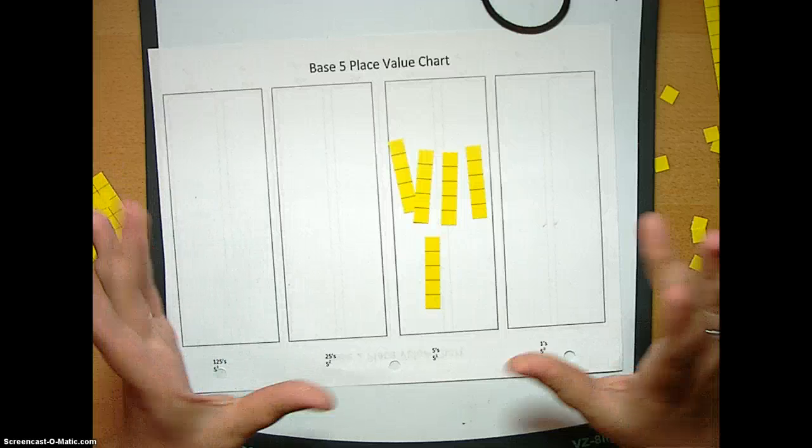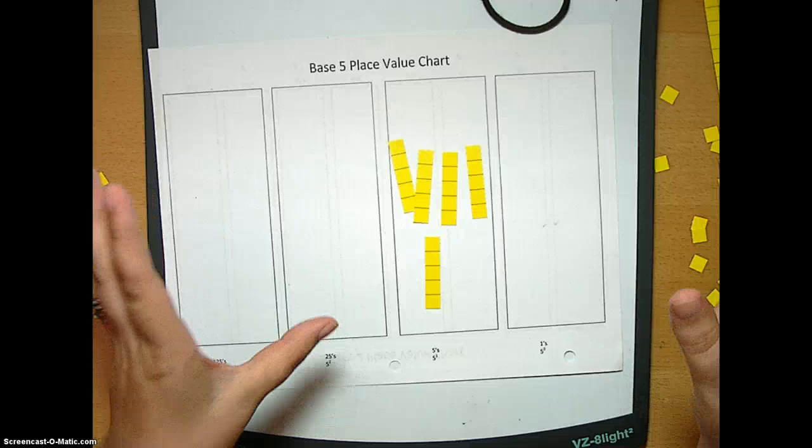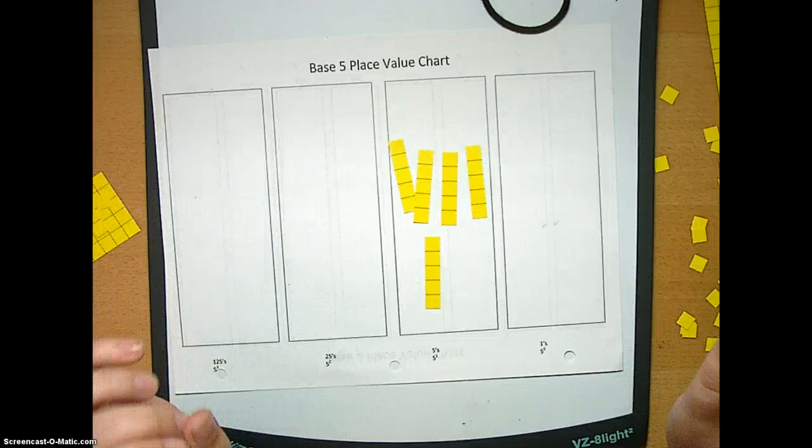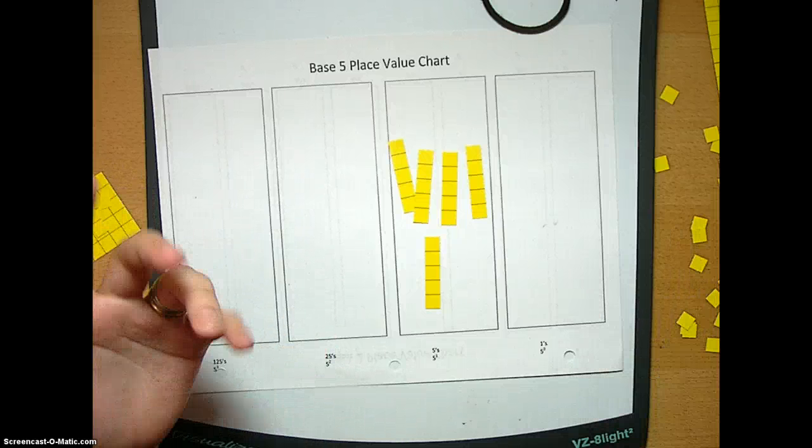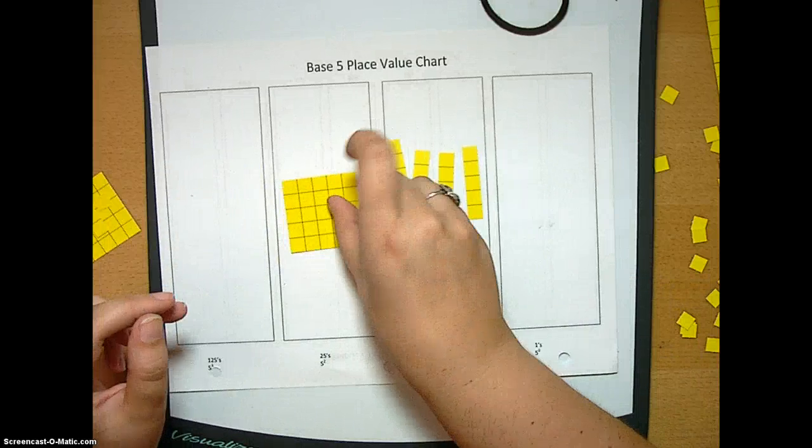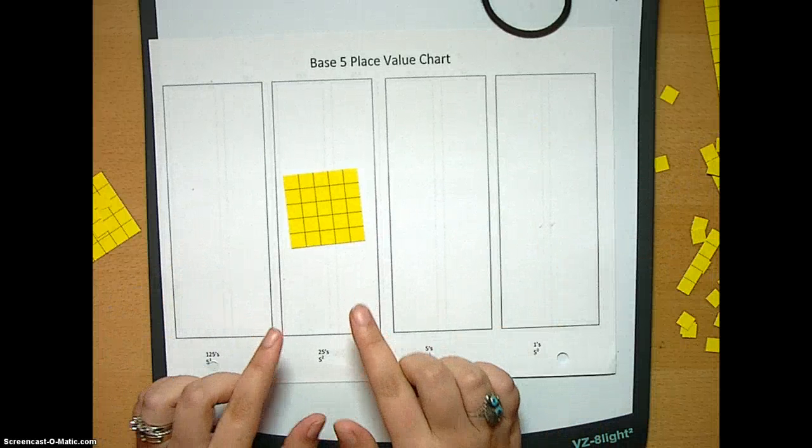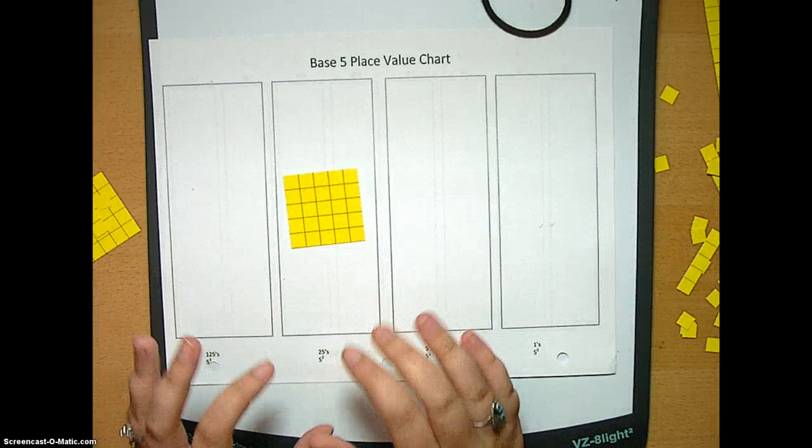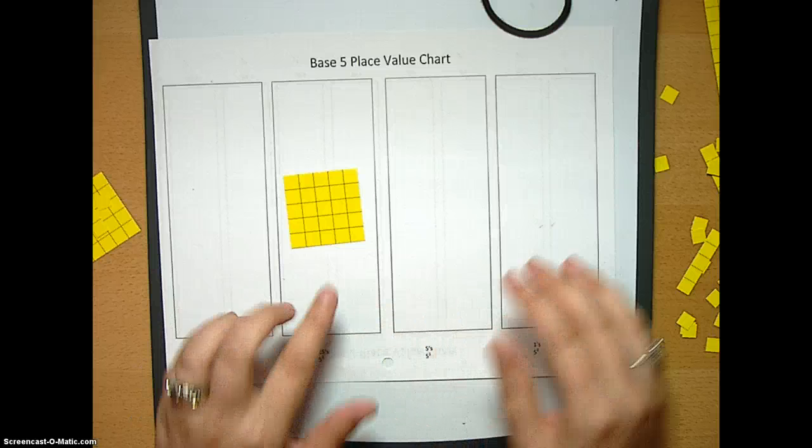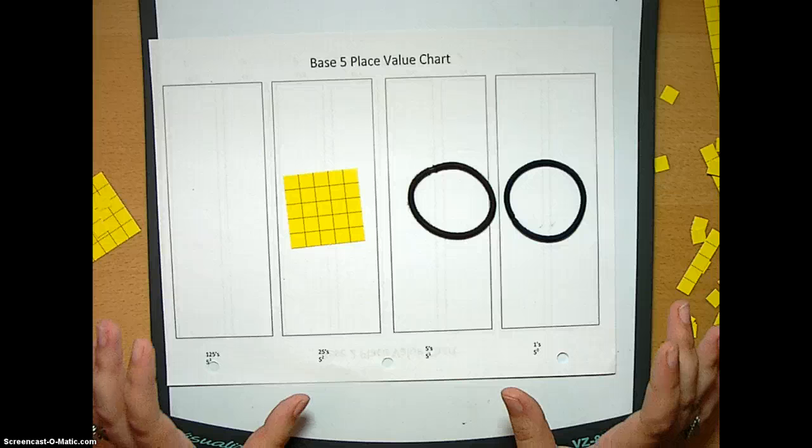Now we have five groups of five. And again, the number five five just doesn't exist. So these guys, they just, they can't just stay there. I mean, that's just wrong. So we're going to exchange them for this guy. We're going to take them away. Okay. So now we have one group of 25. So we have one, zero, zero, base five.